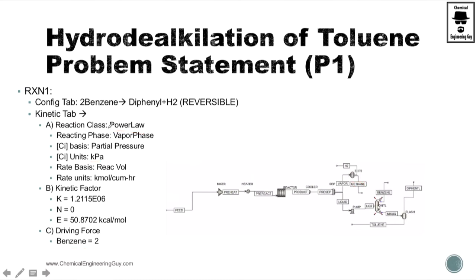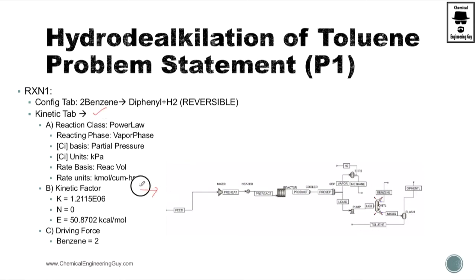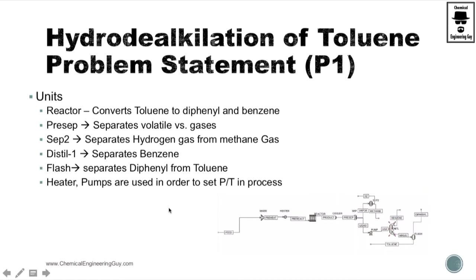Reaction number two converts benzene to diphenyl with hydrogen gas also produced. This is interesting because this is a reversible reaction, whereas the previous one is not. We use kinetic tabs, and we need to add the reverse condition along with the units.